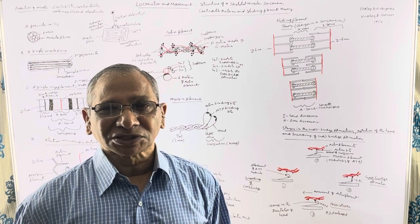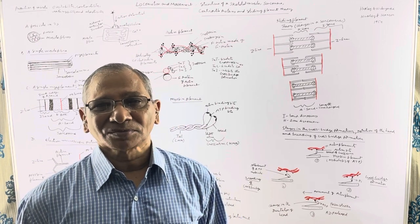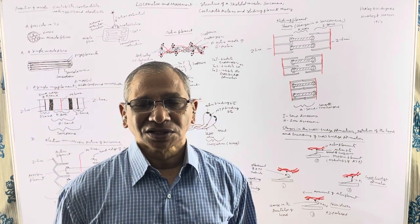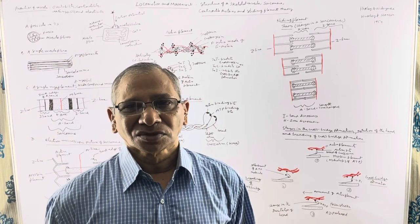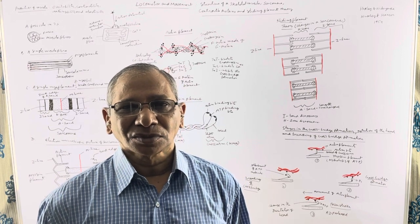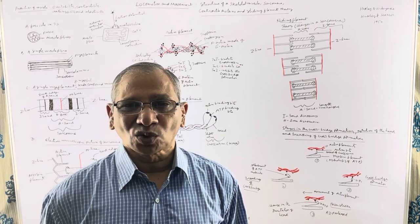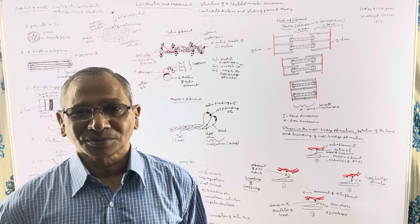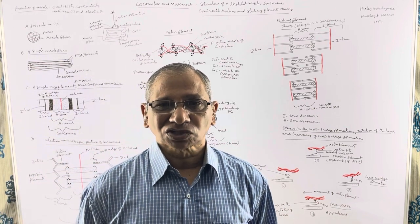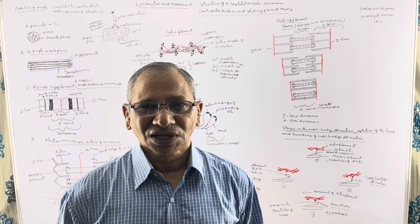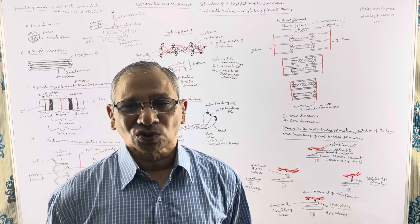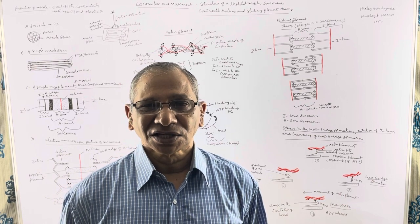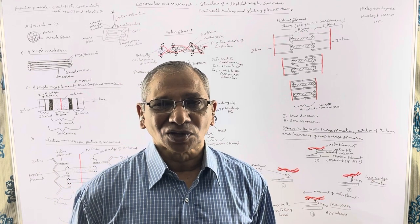The plasma membrane of a muscle fiber is known as sarcolemma. The cytoplasm of a muscle fiber is known as sarcoplasm. The endoplasmic reticulum of a muscle fiber is known as sarcoplasmic reticulum. The sarcoplasmic reticulum is the storehouse of calcium ions, which play an important role in muscle contraction.